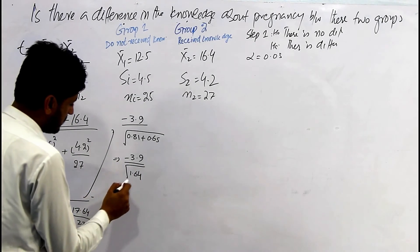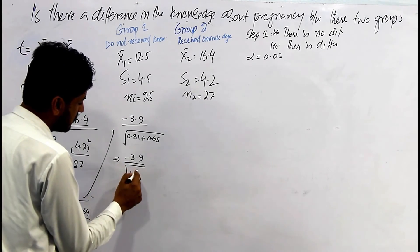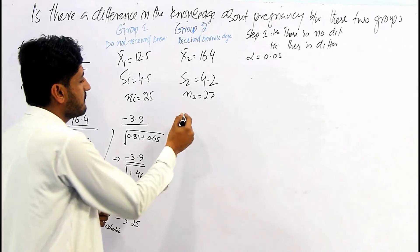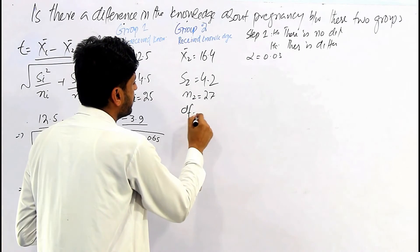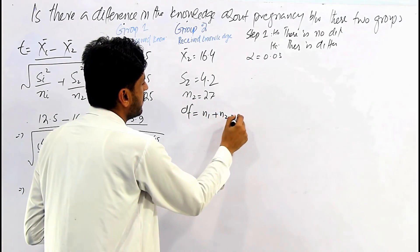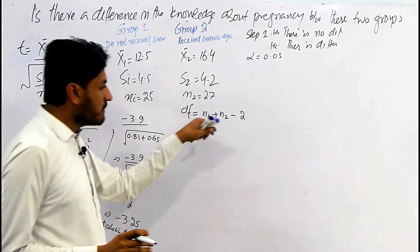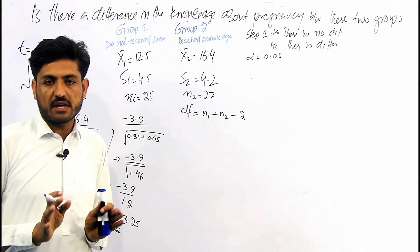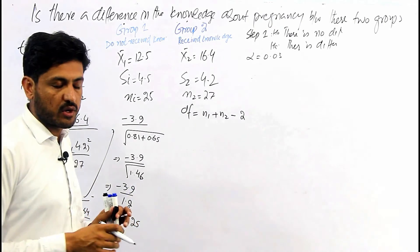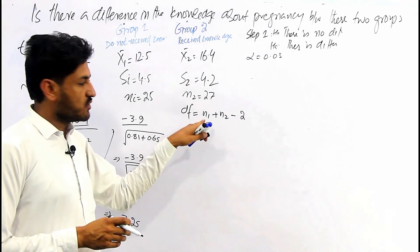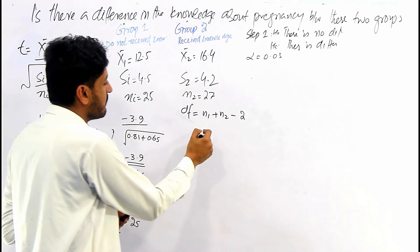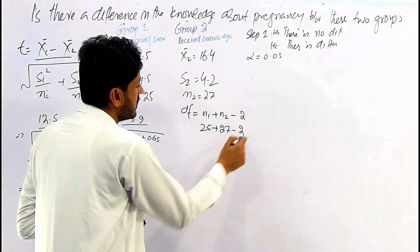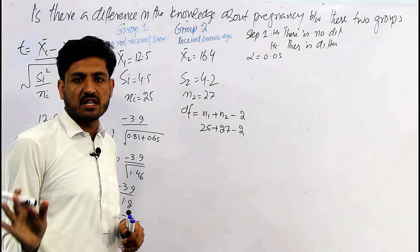The calculated t-value is approximately negative 3.23. The degree of freedom is equal to n1 plus n2 minus 2. With n1 equal to 25 and n2 equal to 27, the degree of freedom is 25 plus 27 minus 2, which equals 50.